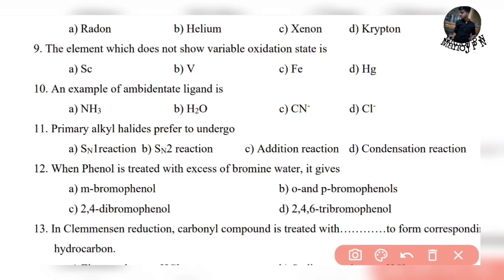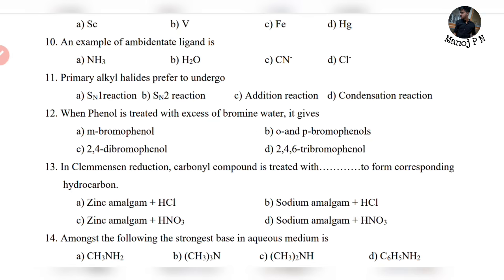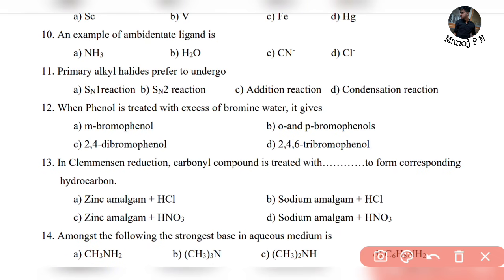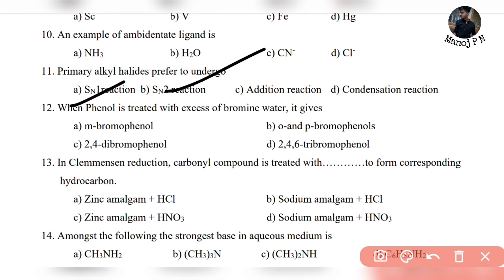Question 11: primary alcohol is preferred to undergo — it's a direct question. SN1 and SN2 are very similar. The trick is: the first option and second option — if you use the SN2 reaction with primary alcohol halide, that will be your answer. The SN2 reaction answer — this is a common guess. Primary alcohol halide undergoes SN2.